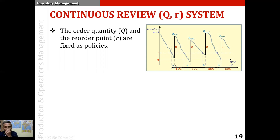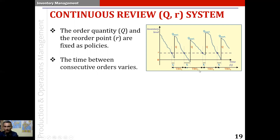However, the lead times across order cycles are all different, and so is the time between consecutive orders — it varies from one cycle to the next. The Q-max, the maximum inventory position reached, is also different in each order cycle because when the replenishment arrives, the inventory on hand or inventory position is different each time. This is the continuous review system where Q and the reorder point are fixed and all other parameters vary.